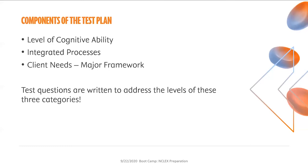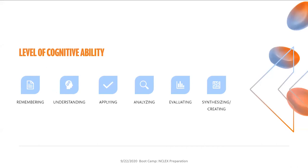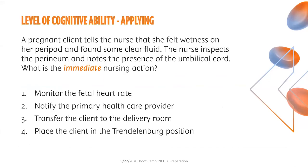We're going to look at the levels of cognitive ability: remembering, understanding, applying, analyzing, evaluating, synthesizing, and creating. It's not at all likely that you'll encounter questions at the level of remembering or understanding. Questions are written typically at the applying level or higher because the practice of nursing requires clinical reasoning and clinical judgment. This means you'll be required to apply, analyze, and evaluate the information provided in test questions, and also use synthesizing and creating — for example, creating plans of care or teaching plans for clients.